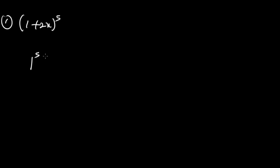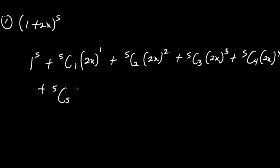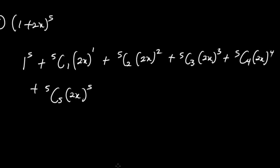Having 1 as the first term, you can follow this principle. We start with 1^5, which is just 1, then plus 5C1 · (2x)^1, plus 5C2 · (2x)^2, plus 5C3 · (2x)^3, plus 5C4 · (2x)^4, and lastly 5C5 · (2x)^5. We are going from power 1 to 5. Note: some methods start from 0, but in this combination method we start from 1.